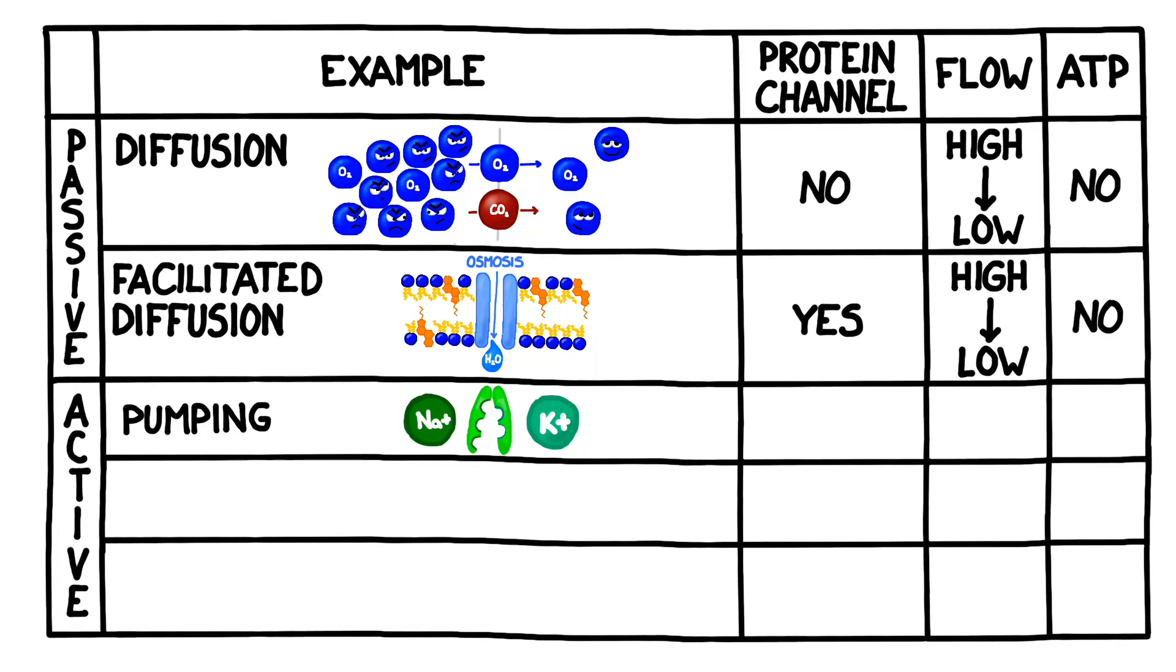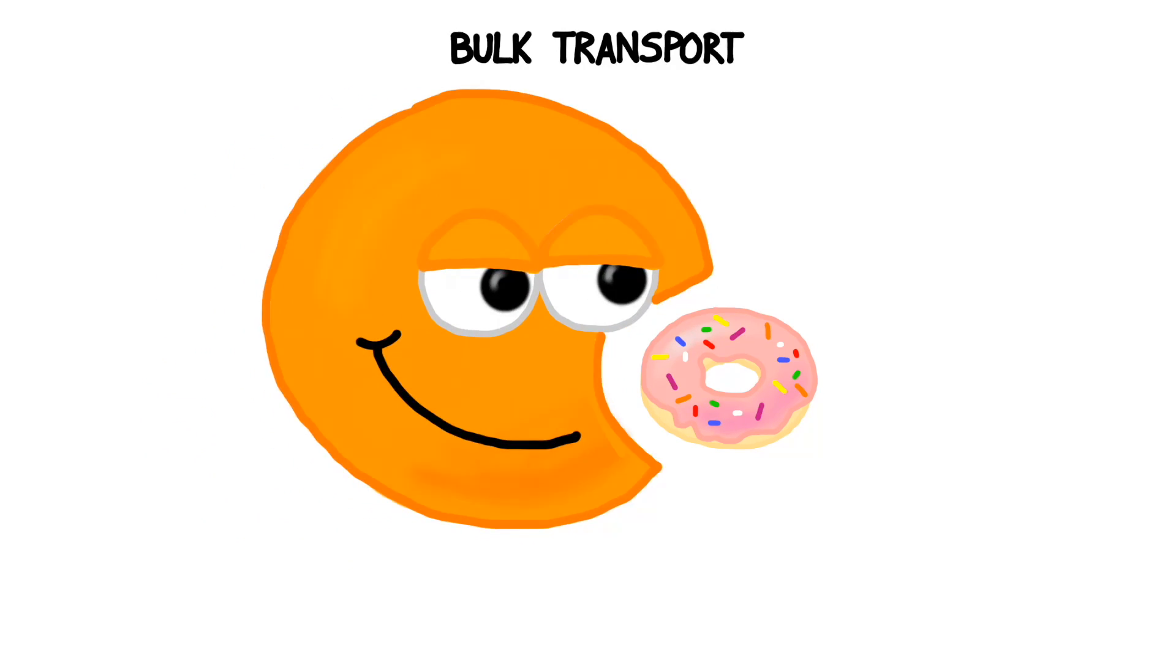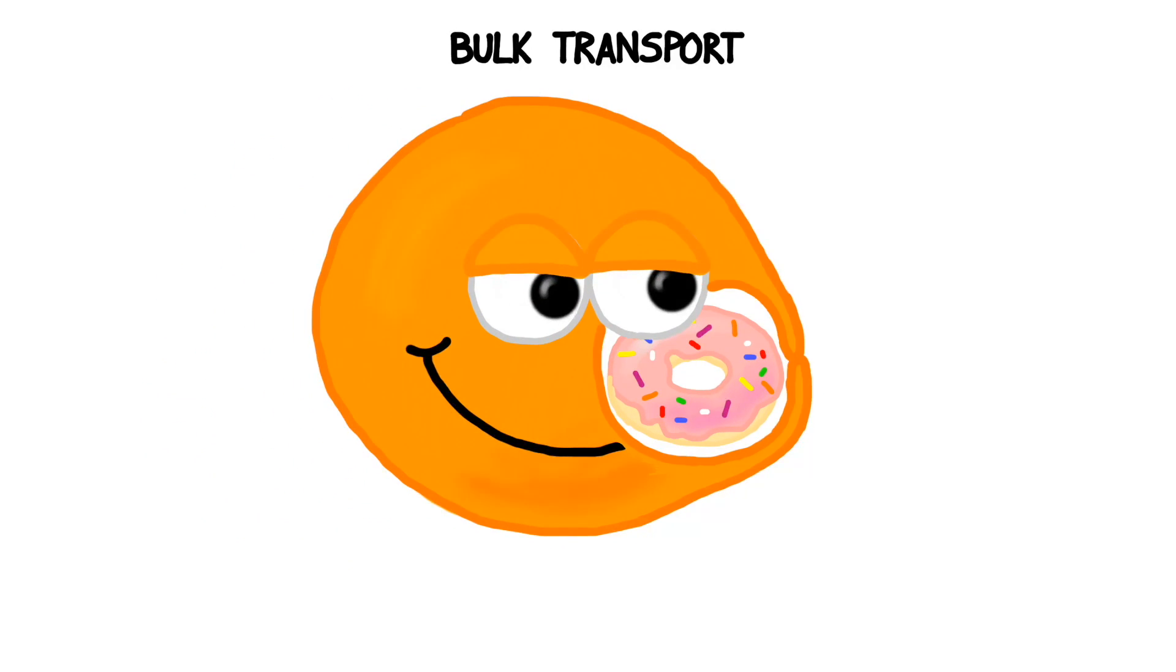In active transport, it's possible to pump particles from low to high concentration, as well as from high to low. The process uses protein channels, and the cell has to spend some ATP. Sometimes, however, it's not efficient enough to transport molecules through the membrane just a few at a time, so cells use a process called bulk transport.